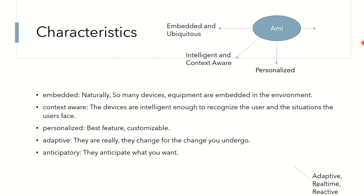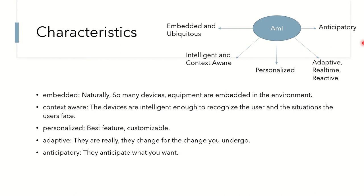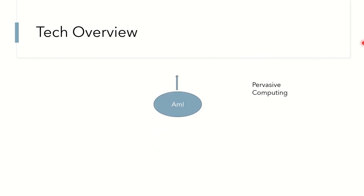Ambient intelligence systems also need to be adaptive, real-time, reactive, and responsive. When you need a service it has to happen immediately without delay — a logical correctness of operation within a deterministic deadline is what real-time means. Finally, they must be anticipatory, meaning the system should anticipate what you want and provide support proactively.